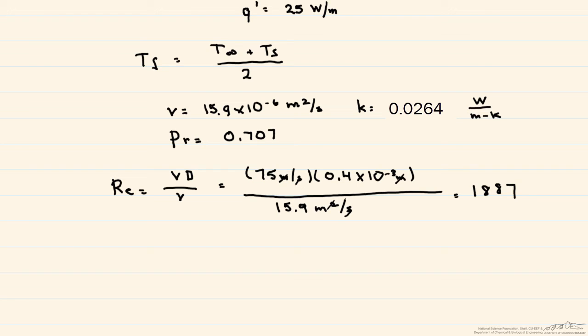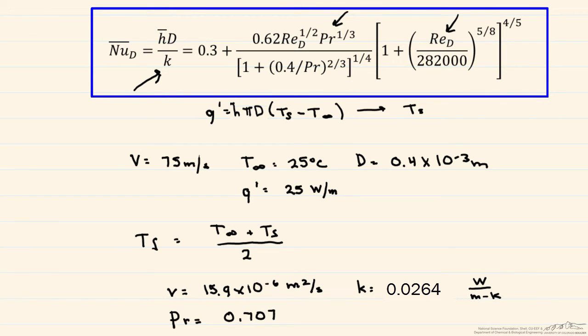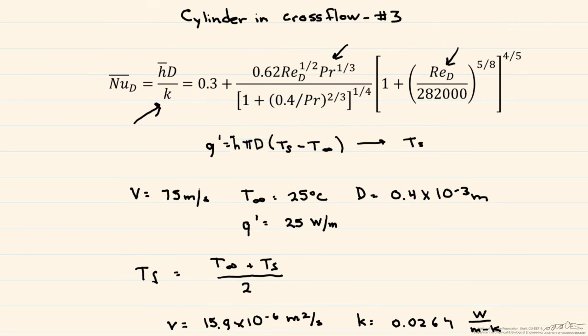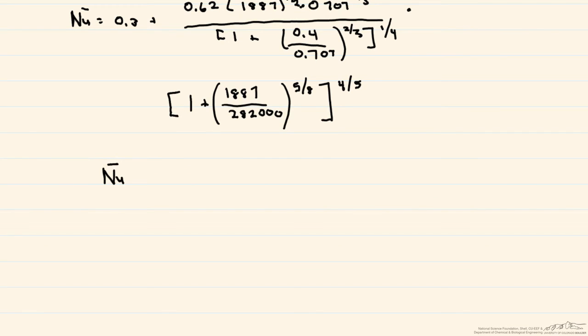And now let's do the tedious job of putting our Reynolds number and our Prandtl number into the above equation. The hardest thing about this actually is getting all of your exponents correct as well as putting the parentheses in the right place. One of the things that I recommend is to calculate this term by term. And so if you did everything correctly, you end up with a Nusselt number equal to 22.1.